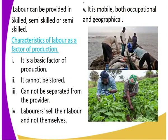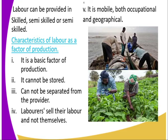Labor can be skilled, semi-skilled, or unskilled. Characteristics of labor: it is a basic factor of production; it cannot be stored — you cannot store a service; it cannot be separated from the provider. For example, you cannot remove a teacher's teaching activity and give it to someone else. We hire their labor, not themselves. Labor is also mobile, both occupationally and geographically — a teacher can be transferred from one place to another.